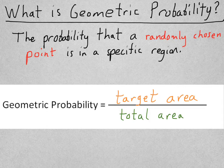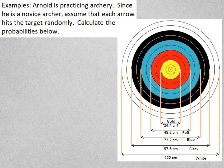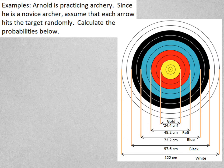Now, in order to make more sense of that, let's just jump into an example. Let's say Arnold is practicing archery. Since he's a novice archer, let's assume that each arrow hits the target randomly. Then, we'll calculate these probabilities.